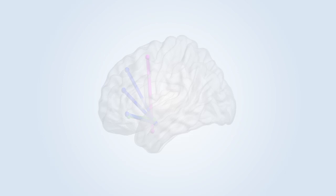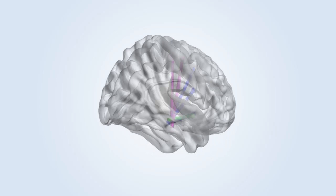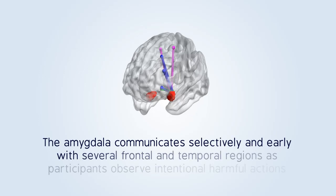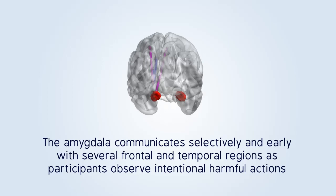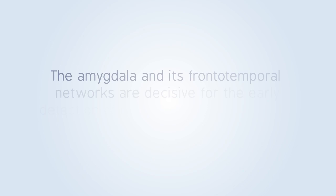Using recent connectivity measures that show how multiple brain areas coordinate activity during task performance, we found that the amygdala communicates selectively and early with several frontal and temporal regions, as participants observe intentional harmful actions.